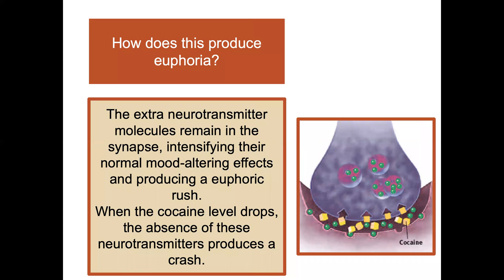By binding to the sites that normally reabsorb neurotransmitter molecules, cocaine blocks reuptake of dopamine, norepinephrine, and serotonin. The extra neurotransmitter molecules remain in the synapse, intensifying their normal mood-altering effects and producing a euphoric rush. When the cocaine level drops, the absence of these neurotransmitters produces a crash.